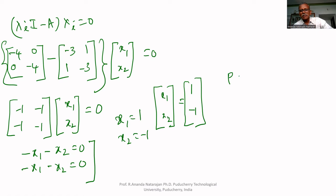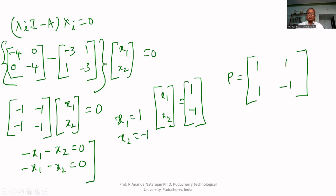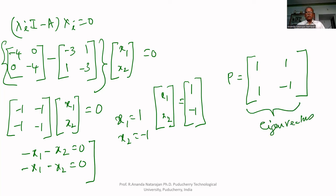Therefore, the P matrix is formed by combining these two eigenvectors: P equals 1, 1, 1, minus 1. This is the P matrix made from the eigenvectors.